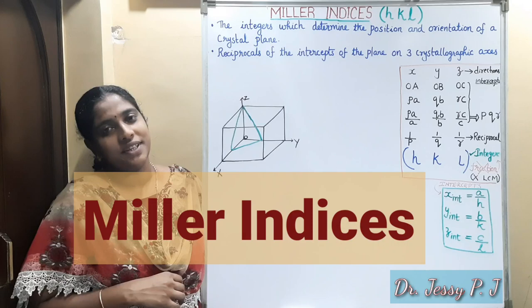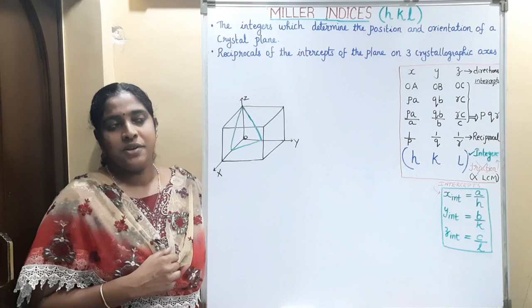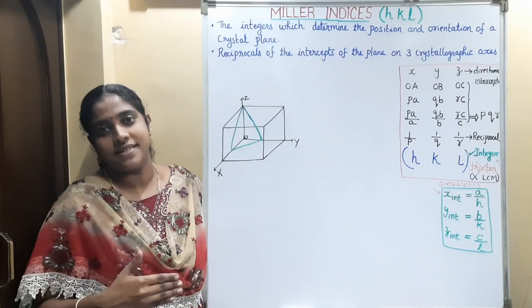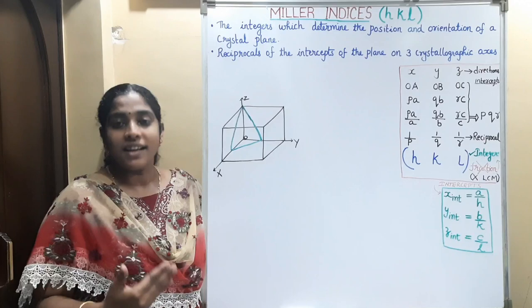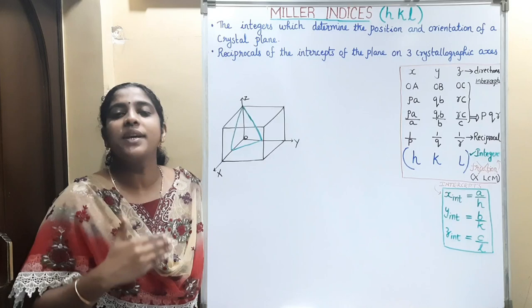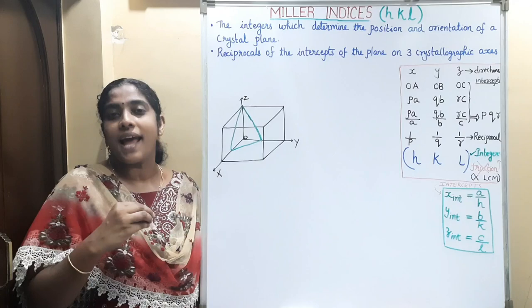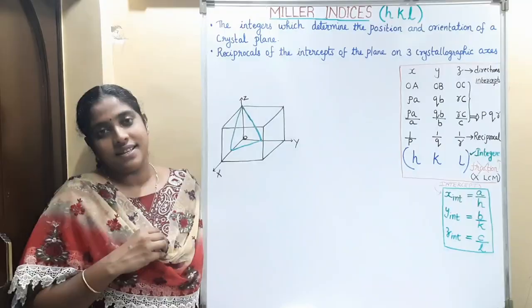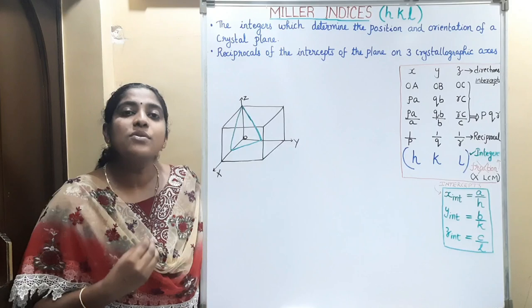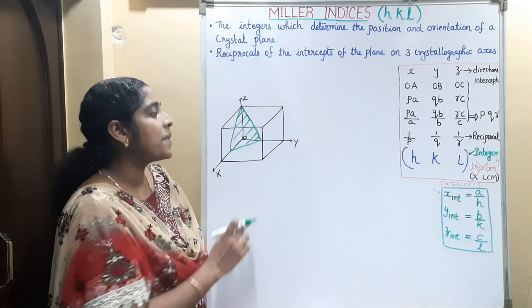Today we will discuss Miller indices, which comes under the topic of crystallography. In the study of various crystal structures, we deal with a number of lattice planes. We can consider a crystal as an aggregate of a number of planes — some lattice planes are parallel to the surface, some are inclined, and so on. It is important to know the position and orientation of crystal planes in a crystal. A British scientist Miller suggested a method to show the orientation of a particular lattice plane, known as Miller indices. Miller indices are three integers which represent the position and orientation of a lattice plane in a crystal.